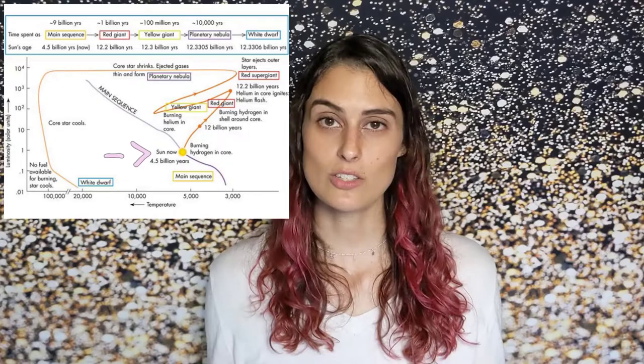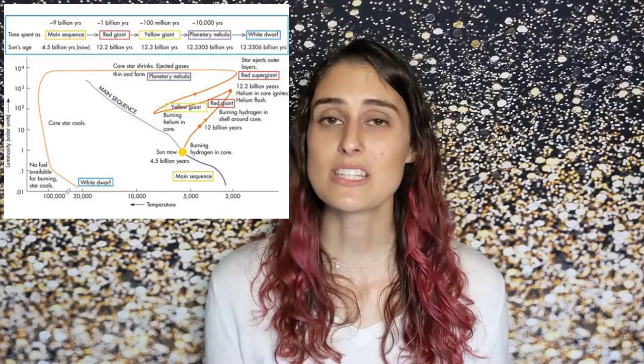To recap: originally the star is going to accrete dust and gas from its birth cloud as a protostar for about a million years. Then as a pre-main sequence star or T-Tauri star, it contracts and heats until it can start burning hydrogen. This takes about tens of millions of years. Then it will begin to fuse hydrogen in its core as a main sequence star — this phase is about 10 billion years.